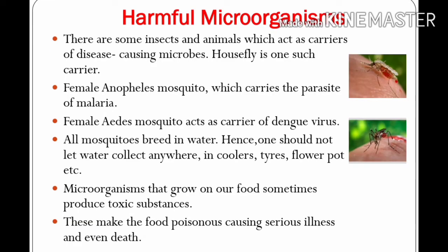There are some insects and animals which act as carriers of disease-causing microbes. The housefly is one such carrier. Flies sit on garbage and animal excreta, and pathogens stick to their bodies. When these flies sit on uncovered food, they may transfer the pathogens, and whoever eats the contaminated food is likely to get sick. So we always advise keeping food covered — we should never eat uncovered food items.